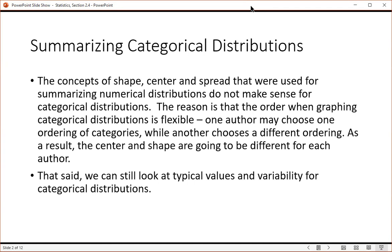As a result, the center and shape are going to be different for each author. That said, we can still look at typical values and variability for categorical distributions.